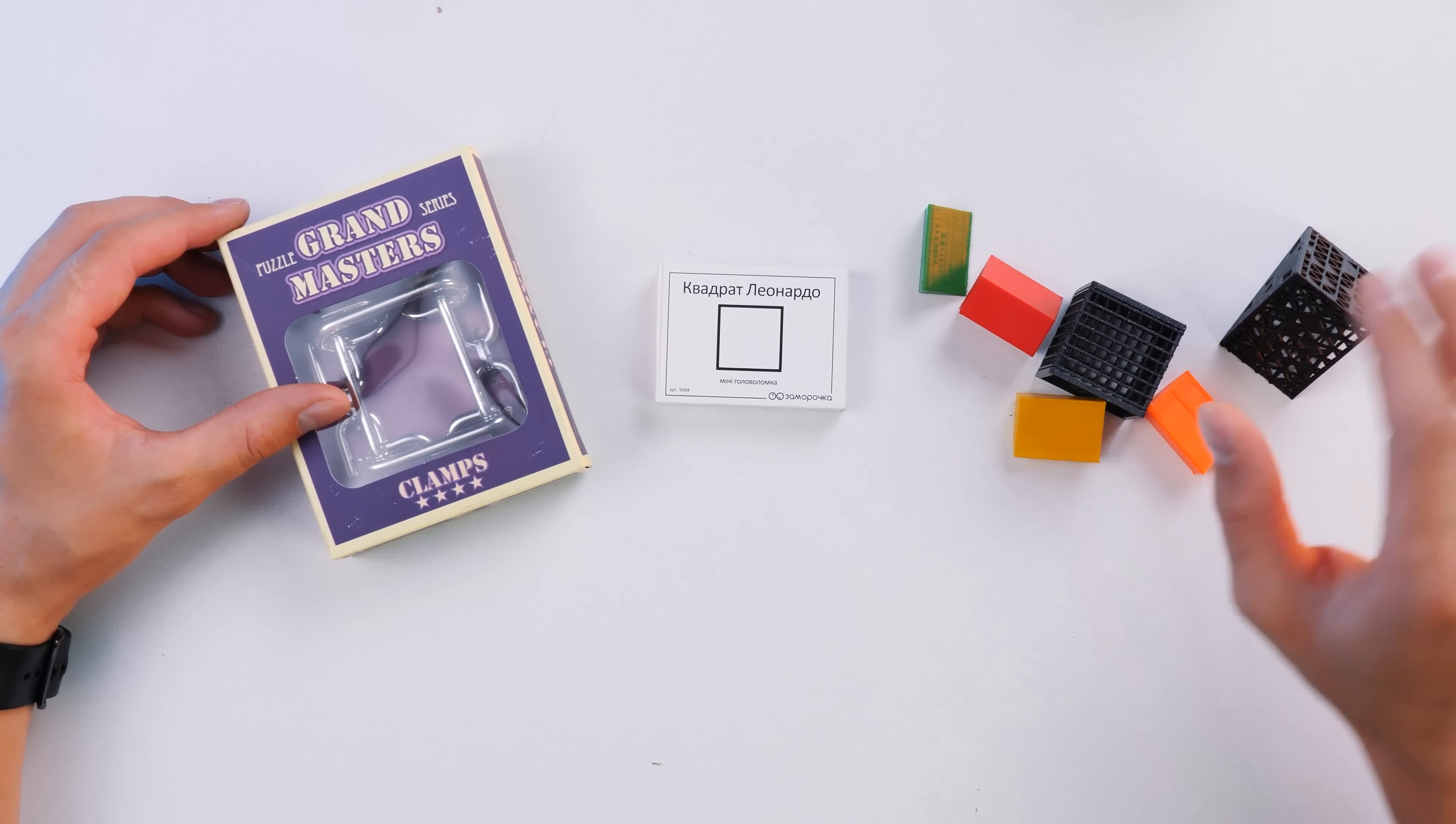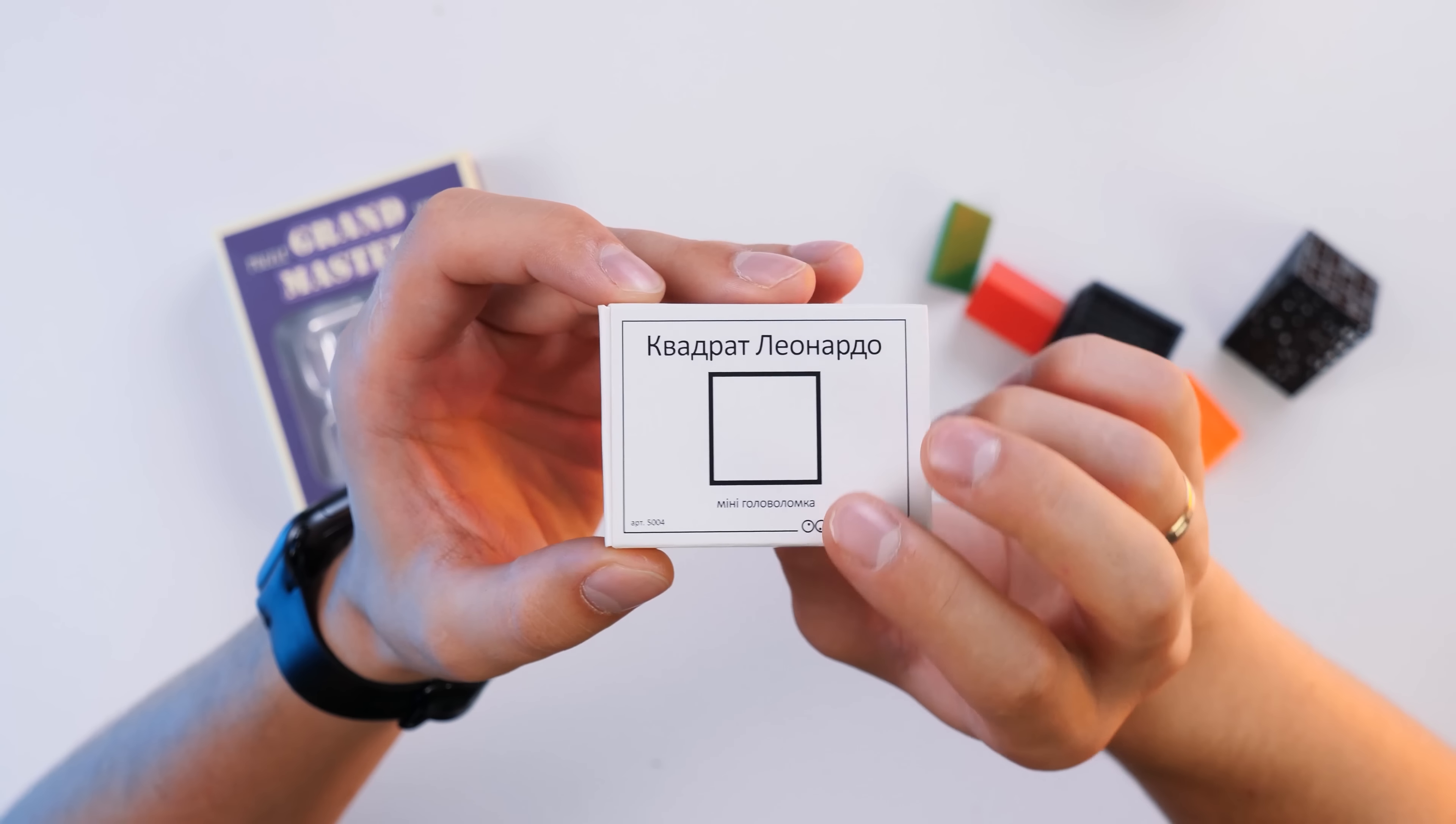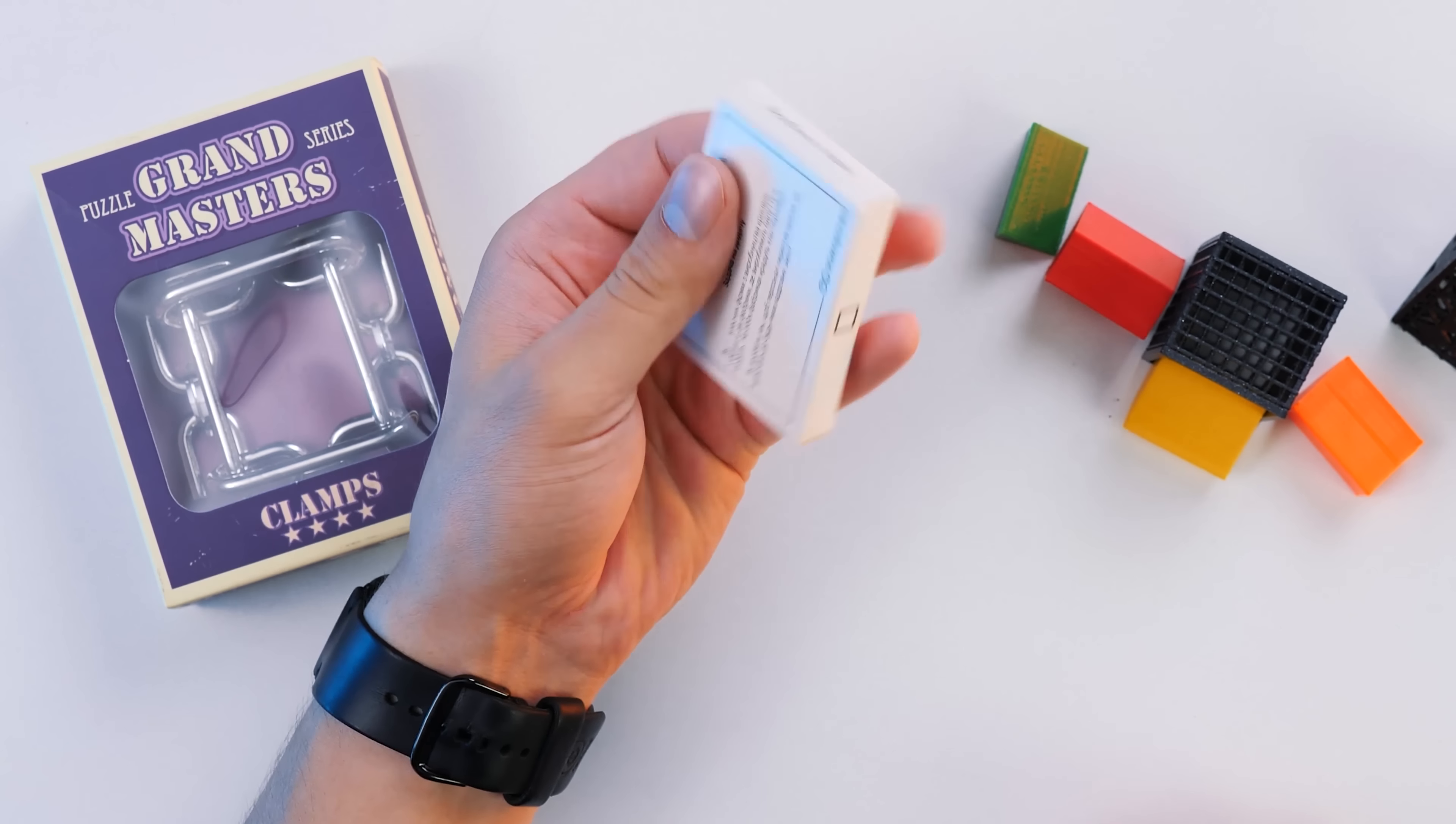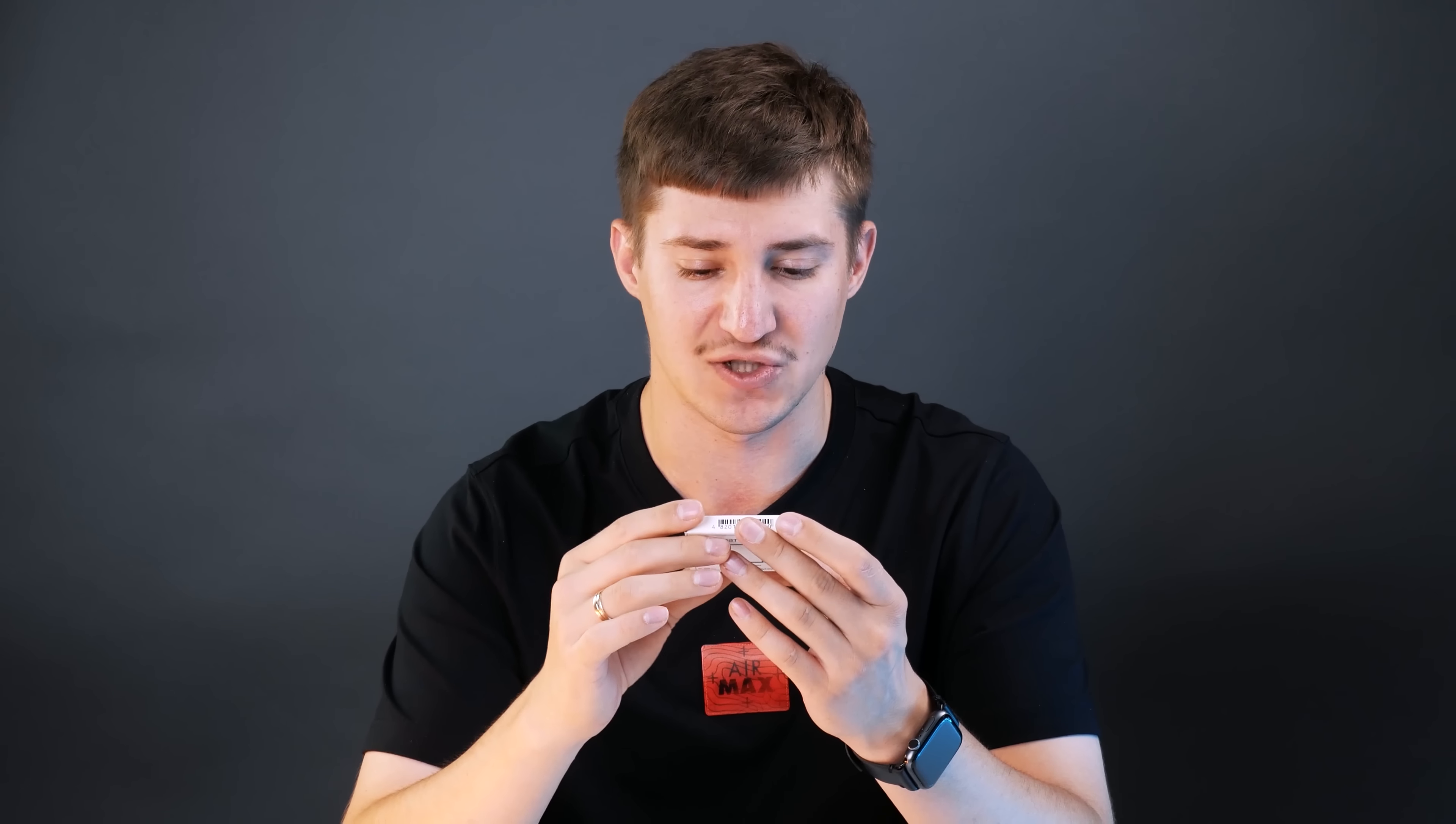And I suggest we start with this, the simplest one, which is called the Leonardo square. And I decided to start with it because this puzzle is made in Ukraine. We can call it mini puzzle because it is really small, it fits the palm of any size. And there's an extra riddle here. Let's do some warm-up and solve this riddle.